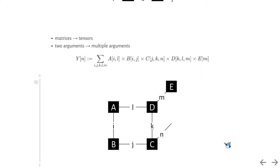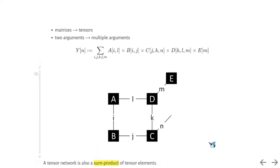we have an example of a tensor network of size 5. The five tensors have rank 2, 2, 3, 3, and 1. There are five inner degrees of freedom, I J K L M, and one outer degree of freedom, N.